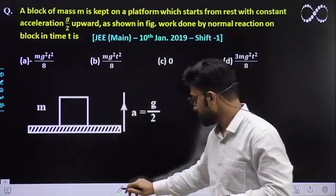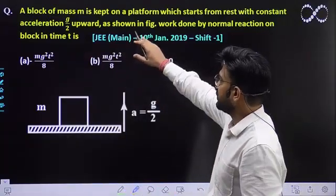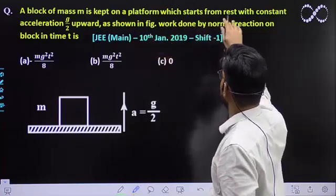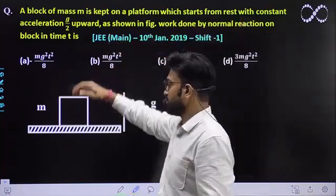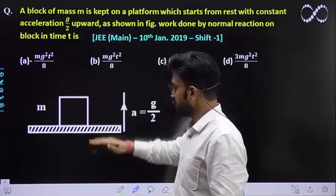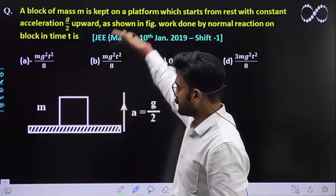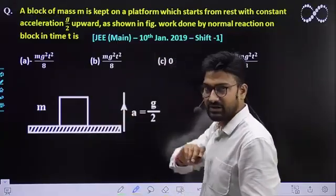Let's see quickly. What is the question? A block of mass small m is kept on the platform which starts from rest with a constant acceleration g by 2. A m kg block which is on the platform and it is accelerating upward with an acceleration of g by 2.